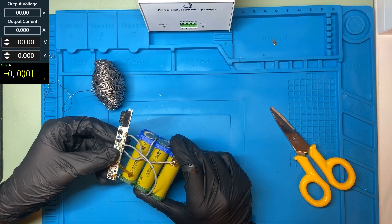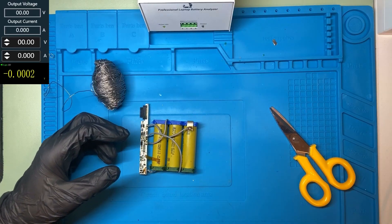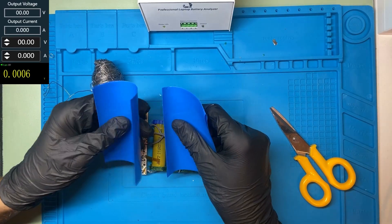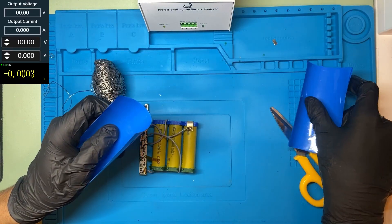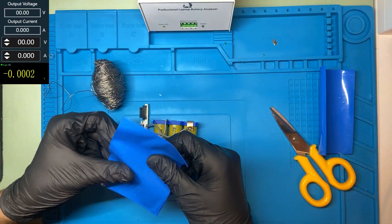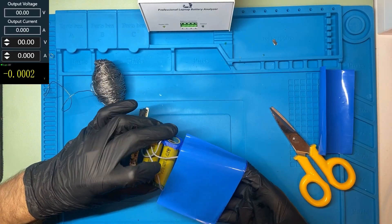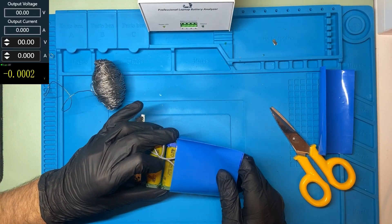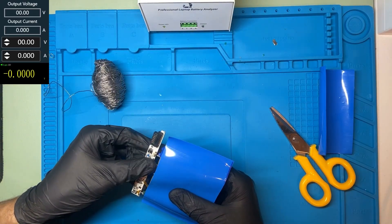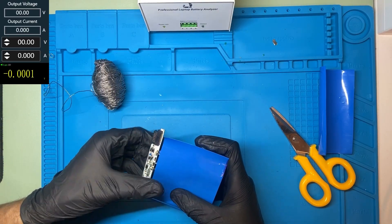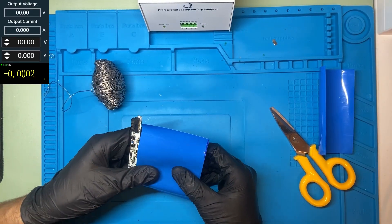Let's slide some heat conductive tubing over the cells to keep them safe. We got here some heat conductive tubing. Let's put the battery cells inside. Let's go.